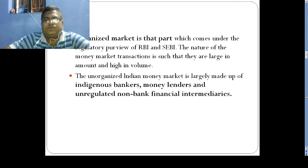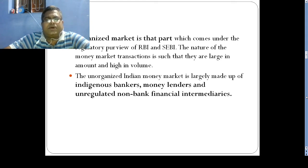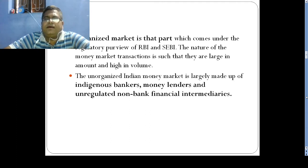The market is generally divided into two parts: the organized market and the unorganized market. The organized market comes under the regulatory policy of RBI and SEBI, with proper rules and regulations. In the unorganized market, there are no rules and regulations — it includes indigenous bankers, money lenders, and unregulated non-banking financial intermediaries, sometimes called chit fund companies or other unregulated financial institutions in the Indian money market.